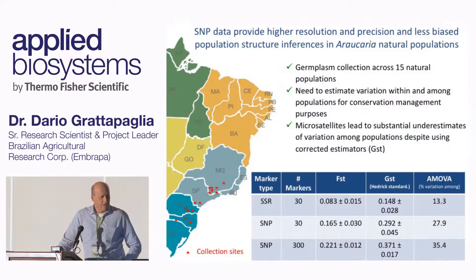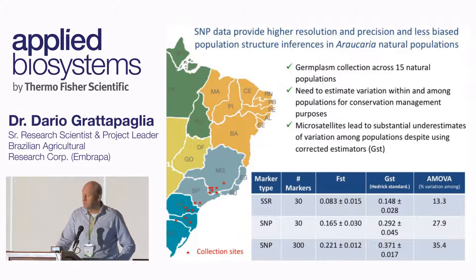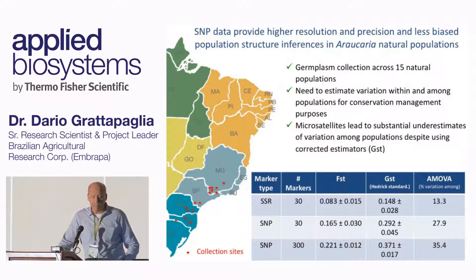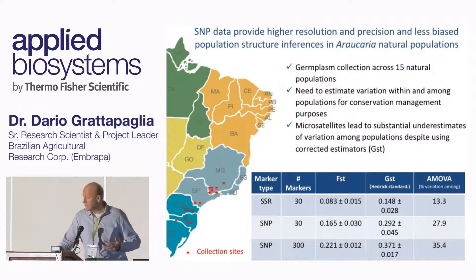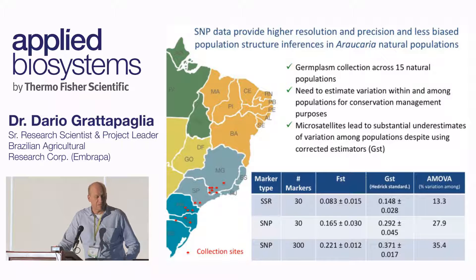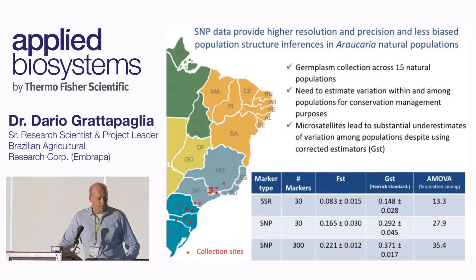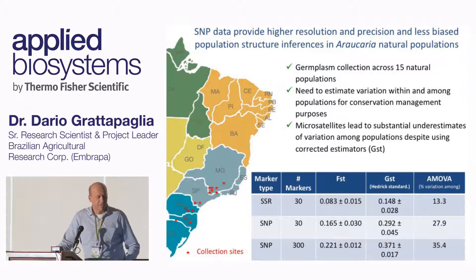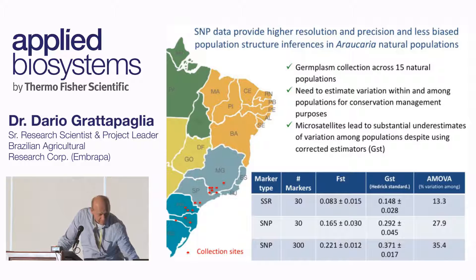For Brazilian pine, it's more to do with natural population conservation and the definition of diversity. This is the only conifer that occurs in Brazil and it's pretty much endangered. By using the SNP data, we provided much more correct information on the distribution of diversity. For example, if you use microsatellite data with 30 markers, you really highly underestimate the differentiation among populations. When you put SNPs, you change the picture completely, which has a large impact on how you're going to manage the remaining natural populations.